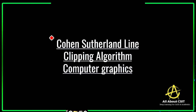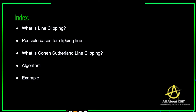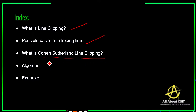Now we will see another topic in computer graphics: the Cohen-Sutherland line clipping algorithm. In this video I am going to explain what exactly line clipping is, what are the possible cases for clipping the line, what exactly the Cohen-Sutherland line clipping algorithm is, and we will see the algorithm and finally learn an example. At the end of this video you will get complete clarity on what exactly this Cohen-Sutherland line clipping algorithm is.